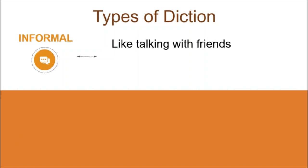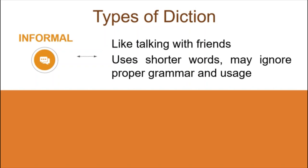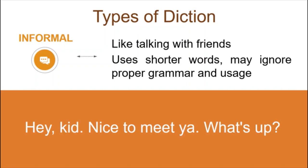In informal diction, these are words used in talking with your friends. You assume that the audience already knows what you're talking about and generally use short words. Sentences may be incomplete or ignore some finer points of grammar and usage. Like in the example: 'Hey kid! Nice to meet ya! What's up?' Take note of the word ya instead of you and the question 'what's up' instead of 'how are you.' Unlike formal diction, which is used in formal situations, informal diction is used when you're with friends — at school, at a friend's house. There is less tension, making the feeling lighter and there is no need for formal words.